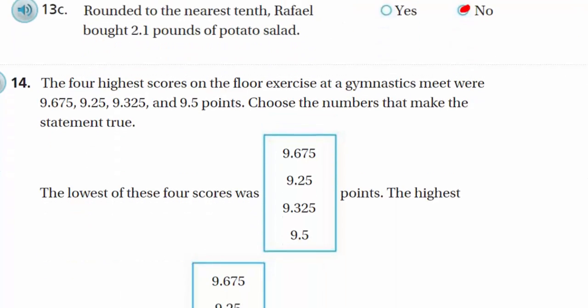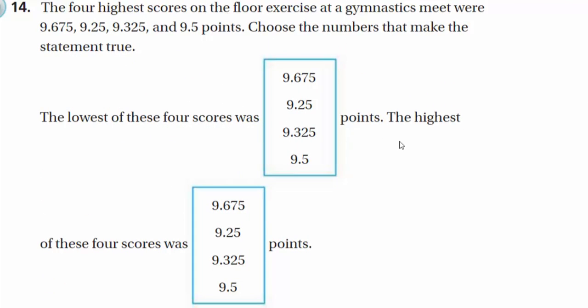Let's bring it on down. Hey, last action here. The 4 highest scores on the floor exercise at a gymnastics meet were 9.675, 9.25, 9.325, and 9.5 points. Alright. Choose the numbers that make the statement true. The lowest of these four scores was, well, the lowest, since they all have the 9 in the ones place, we have ourselves a four-way tie. So, let's go ahead and take a look at the tenths place. Here we have a 6. He would be high 2. Ooh, that's lower, so he'd want that one, 2. Here we have a 3. Sorry, you're out of the running here. You have a 5. So, 9.25 is our winner for the lowest of these four scores.